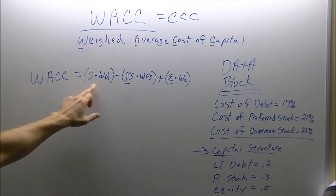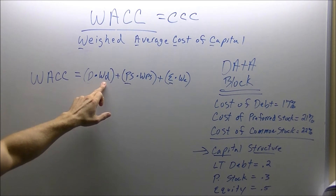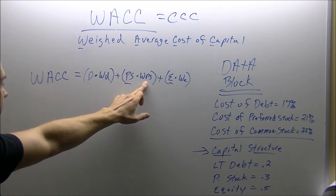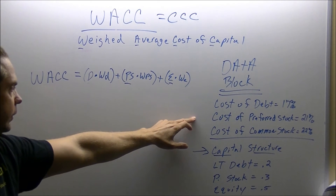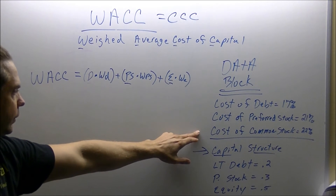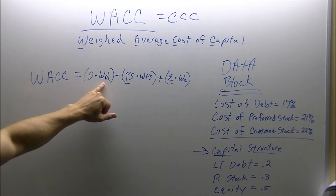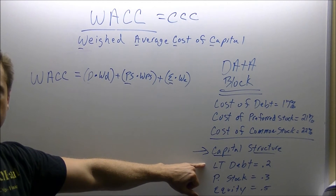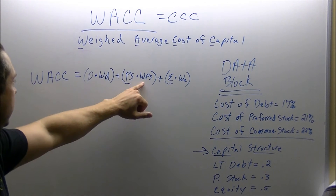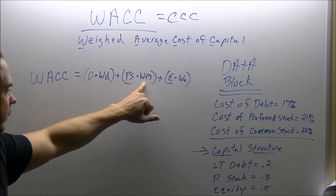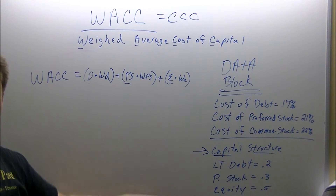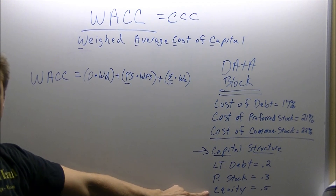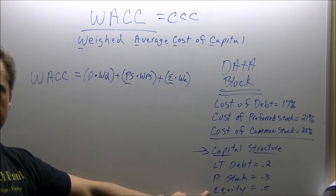The next component of our weighted average cost of capital is going to be the weight — how much debt the company uses for a project, how much weight the company uses for preferred stock, and how much weight the company uses of your common stock. The weight of debt is going to be 20%, the weight of preferred stock is going to be 30%, and the final weight is equity, and the company uses 50% equity to finance all their projects.